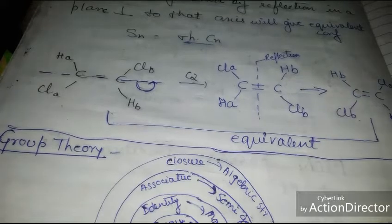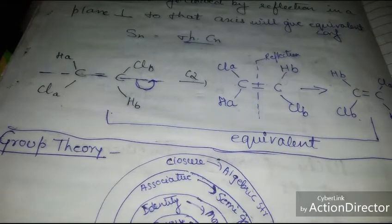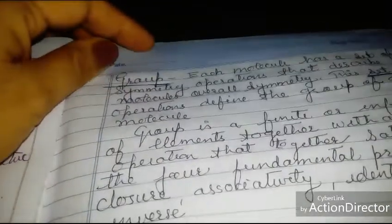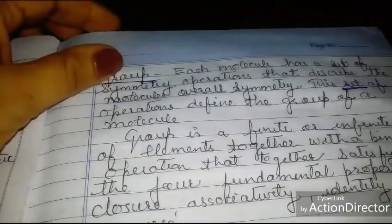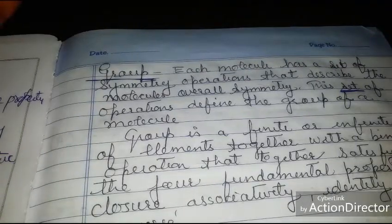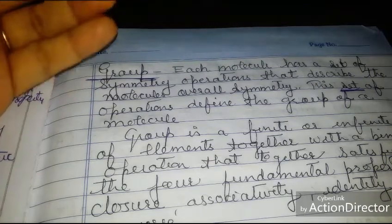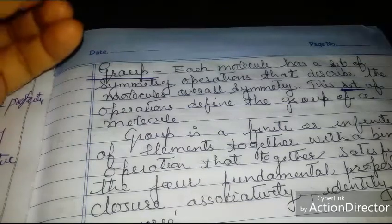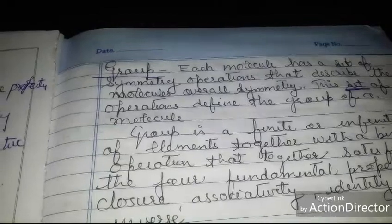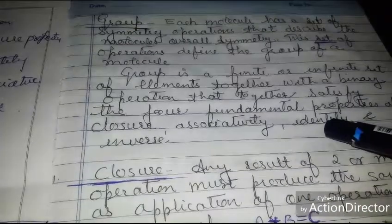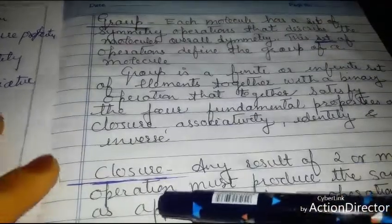Those were the five symmetry operations. Now let us come to the group. Each molecule has a finite set of symmetry operations that describes its overall symmetry, and this set of operations defines the group. A group can be a finite or infinite set of elements along with a binary operation, and it must satisfy four fundamental properties: closure, associativity, identity, and inverse.